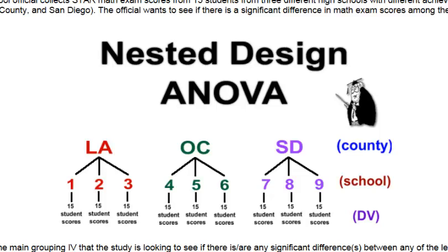A nested design ANOVA is a different type of ANOVA. It's where one of the IVs is embedded in the other IV, or nested. That's where the word nested design comes in.